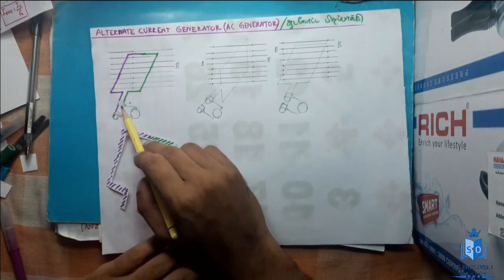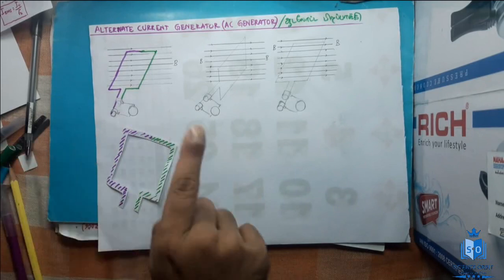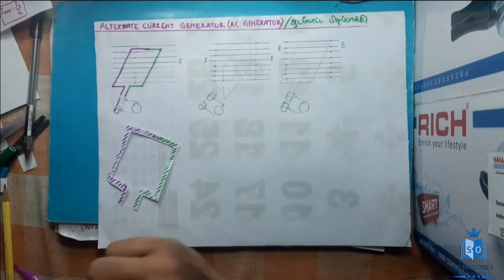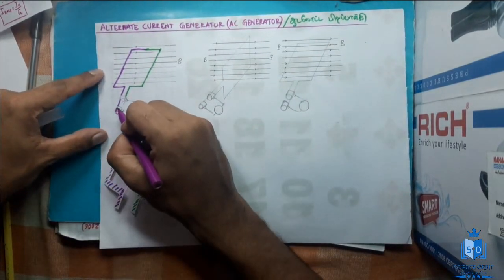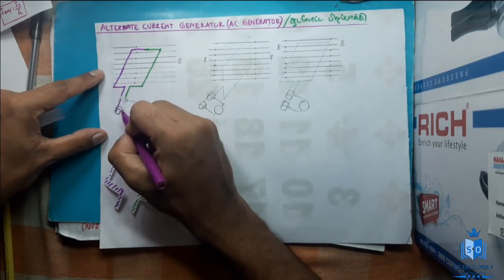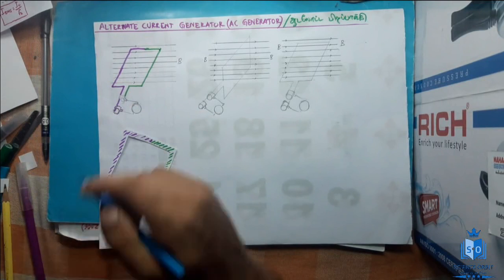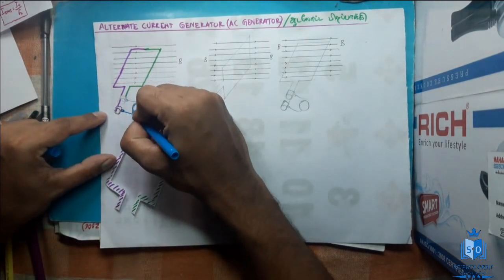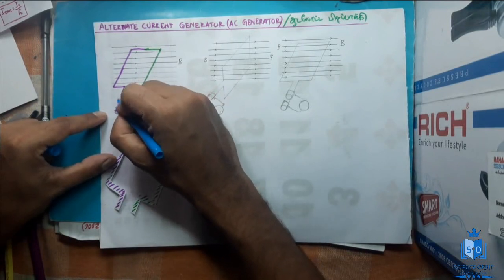These two are called split rings. The split rings will rotate with this wire loop. You can see the left side part is in contact with this one, so I will draw this in purple color. This split ring is the purple one. And what are these two parts? This is the brush — the brush is fixed. The fixed part is drawn in another color. The brush and this is the galvanometer, and another brush here. The brush will be in contact with the ring or the commutator.